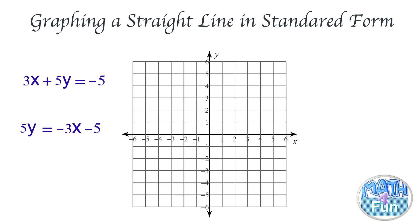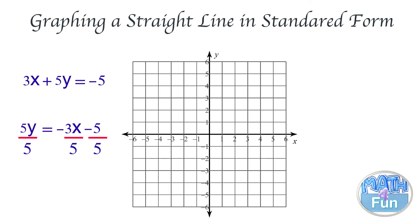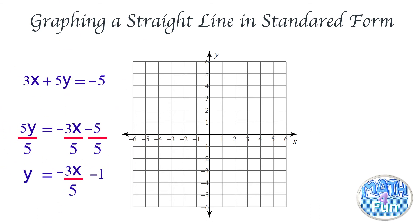In this case we need to simplify more. We have 5 multiplied by y, so we divide all of the equation by 5. Divide by 5, divide by 5, divide by 5. What do we get? We get y = -3/5 x - 1.